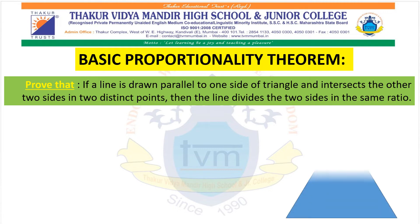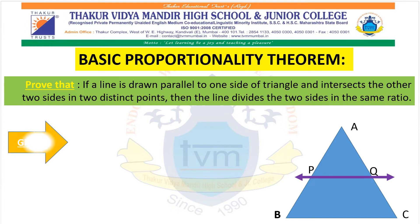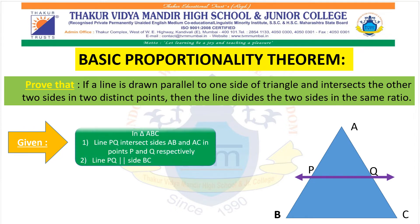For that we need to first draw triangle ABC, then draw a line parallel to one side of this triangle. Let us draw PQ parallel to side BC. Now, looking at this diagram, we write our given: line PQ intersects sides AB and AC in points P and Q respectively.